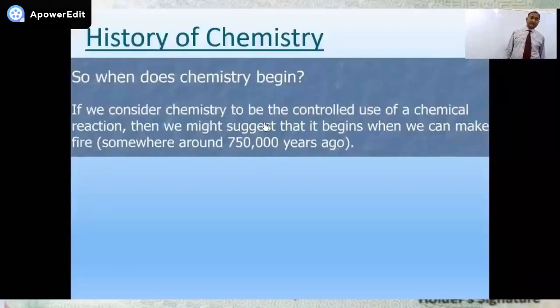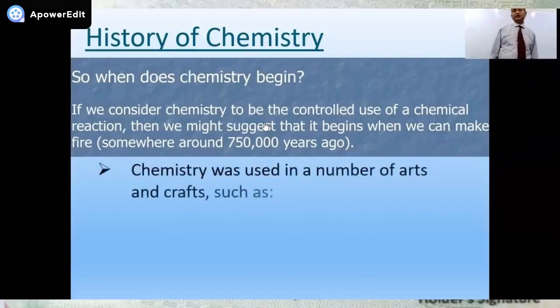So the first question is, when does chemistry begin? Long, long time ago. It's just a theory. Scientists thought that chemistry first began when human beings came to know how to light the fire. Because they think fire is the basic need to proceed a chemical reaction, right? So this was about 750,000 years ago.